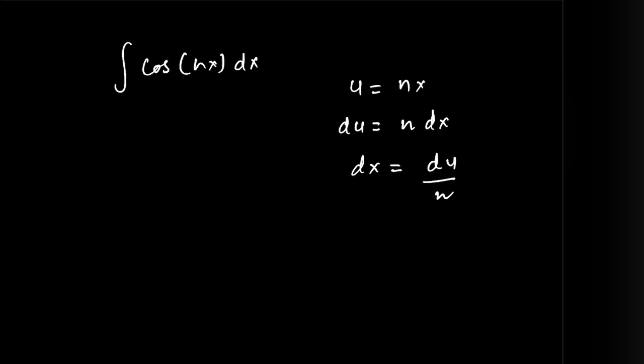Now substituting these values into the equation. So that would result into integral cosine of u multiplied by du divided by n. n being a constant, it would come outside of this integral. That would be equal to 1 divided by n integral of cos of u du.